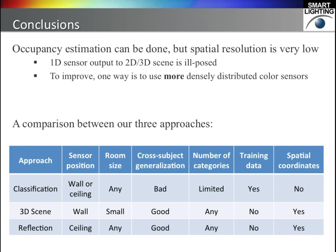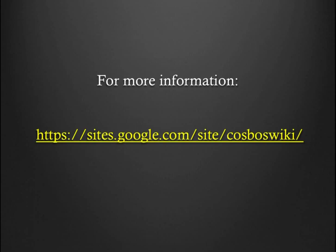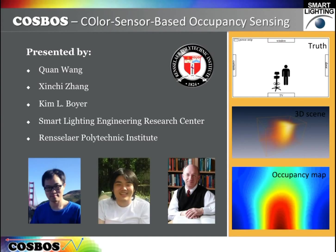Here is a comparison between the three approaches — each of them has its strengths and weaknesses. The current color sensor we are using is a commercial product; it is expensive and slow, thus it is only for experiments. For real applications, we need really fast and cheap sensors, and this is what we are building now. Thanks for watching this video. If you are interested in our work, you can visit our project wiki website. I am Quan Wang from RPI. Thank you.